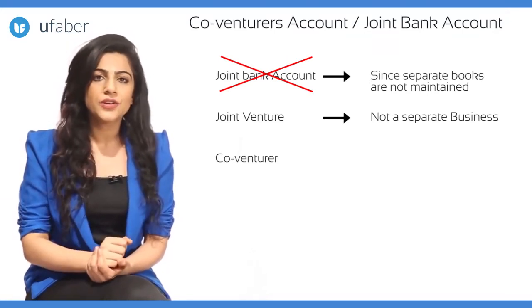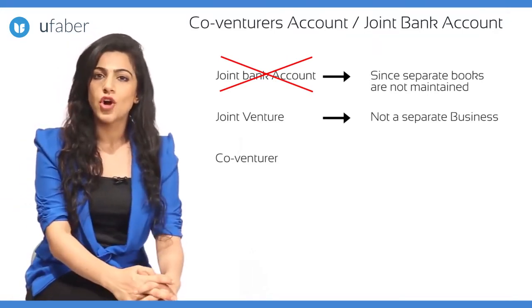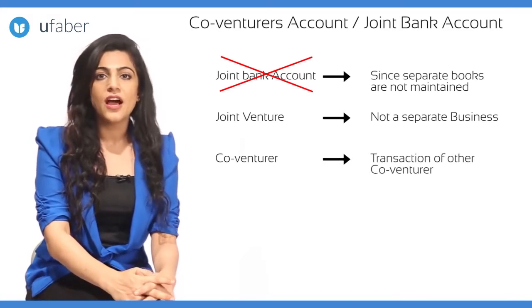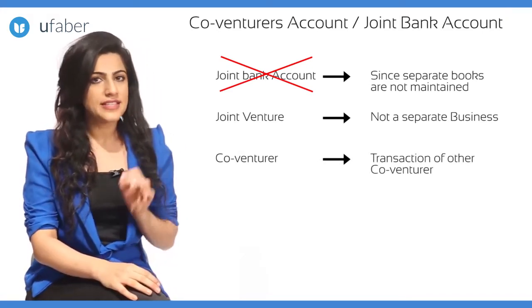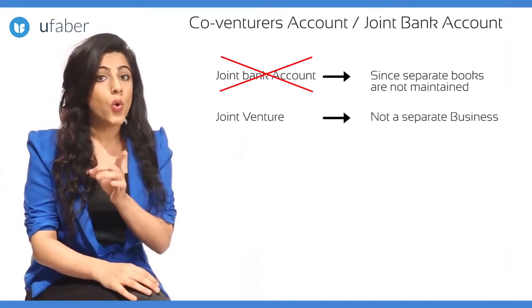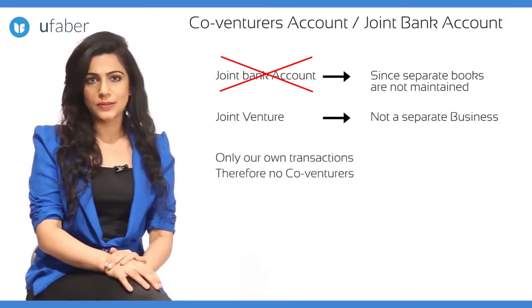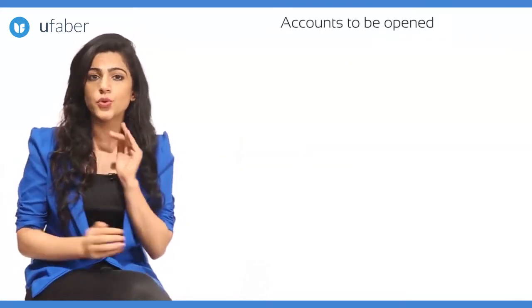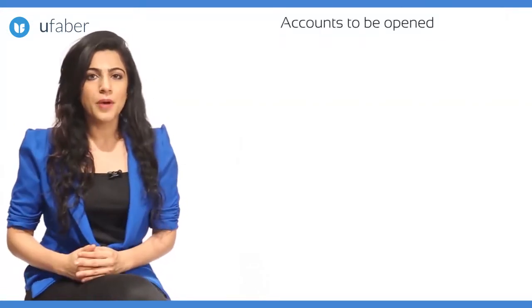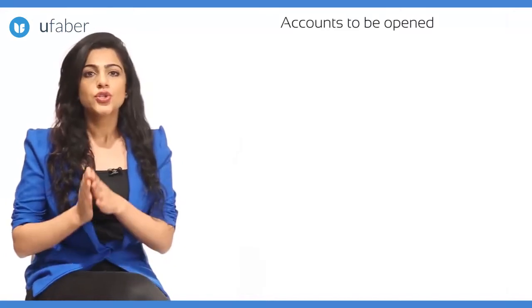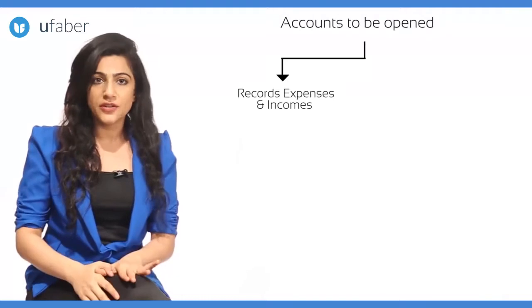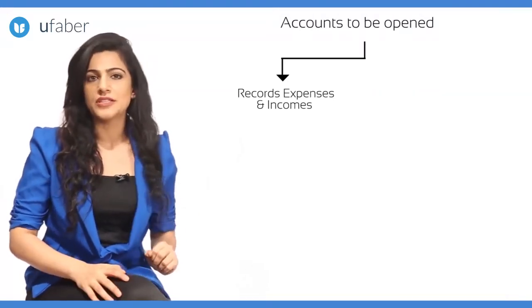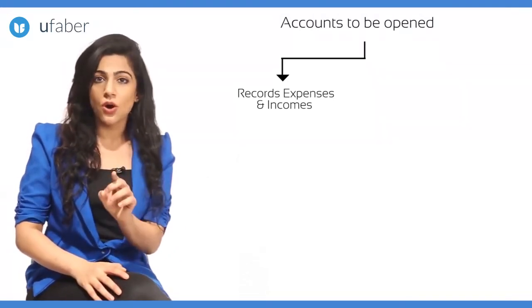Now, as far as the co-venturers account is concerned, this account is created for the purpose of recording the transactions carried out by the other co-venturers. However, in the current scenario, we are recording only our own transactions. So which accounts do we require to create for this purpose?